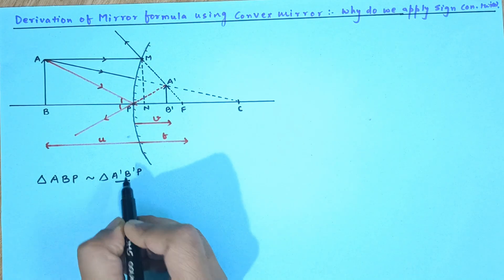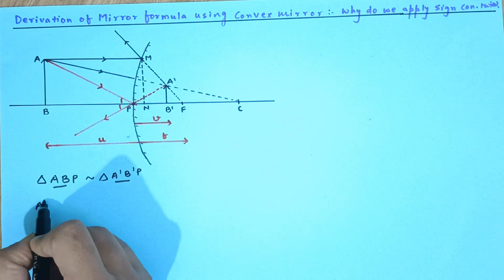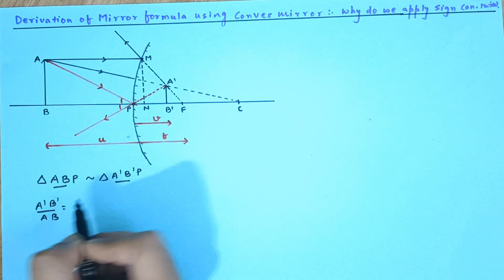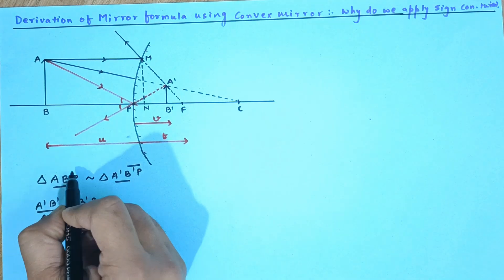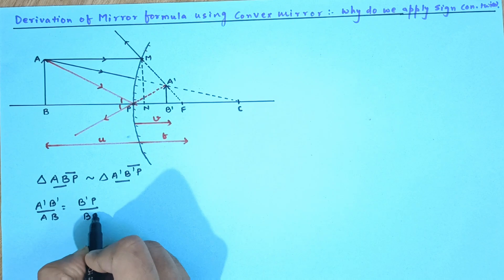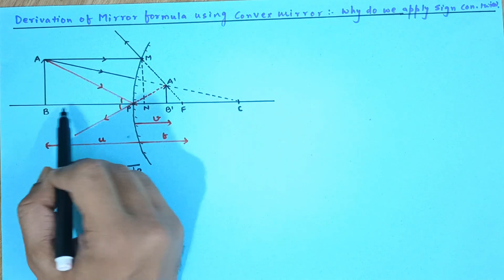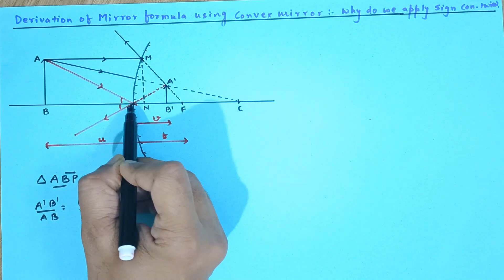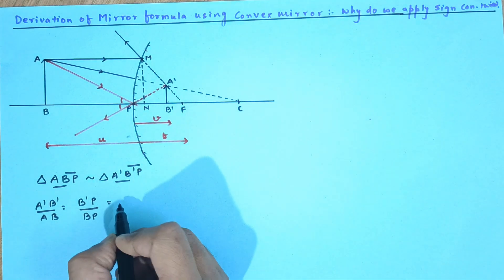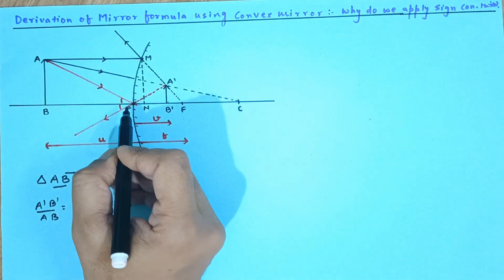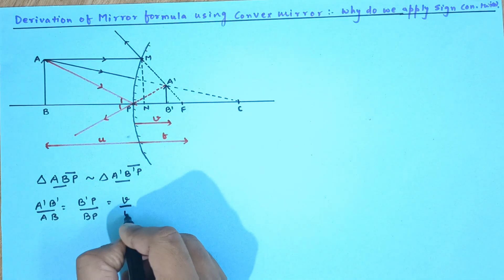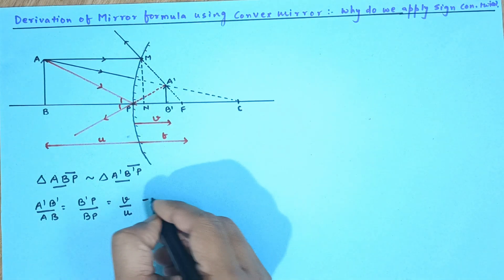So from here I am going to write down A'B' upon AB that is equal to B'P upon BP. Now B'P is the image distance, all distances are measured from the pole. So this is V and BP is the object distance that is U. So this is our first equation.